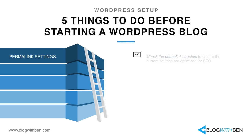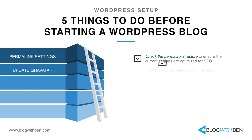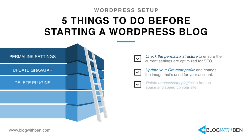Number one: check the permalink settings — we'll review and confirm the permalink structure so URLs are structured for SEO, improving aesthetics, usability, and forward compatibility. Number two: update Gravatar — we'll update the profile image used for your Gravatar account, a key component of your WordPress platform. Number three: delete unnecessary plugins — WordPress pre-installs some pretty unnecessary plugins; for example, the Hello Dolly plugin just displays song lyrics in your dashboard and eats up space.